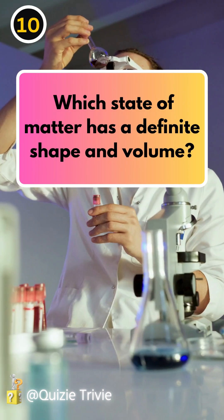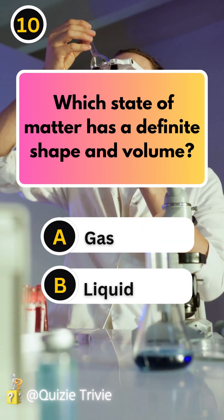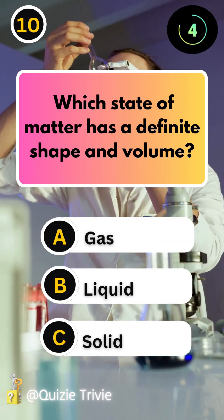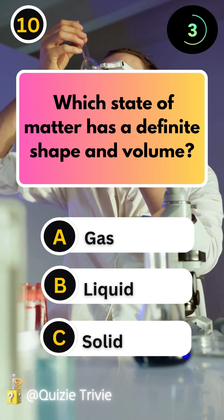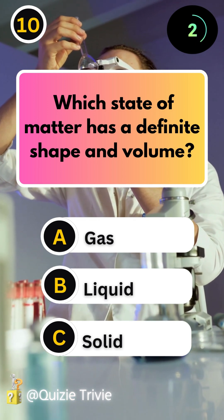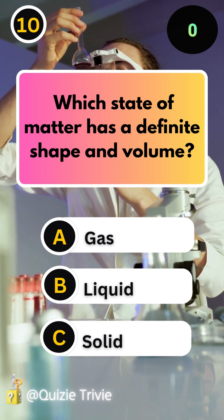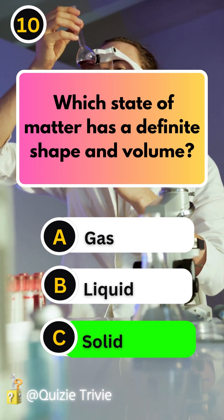Element. Which state of matter has a definite shape and volume? Solid.